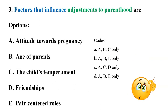Question three: Factors that influence adjustment to parenthood. The options are: A) attitude towards pregnancy, B) age of parents, C) the child's temperament, D) friendship, E) pair-centered roles.